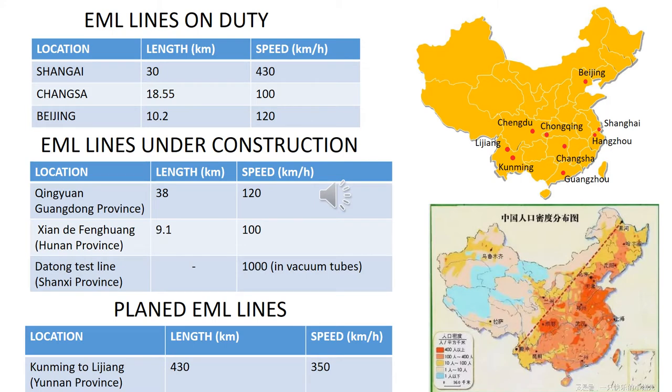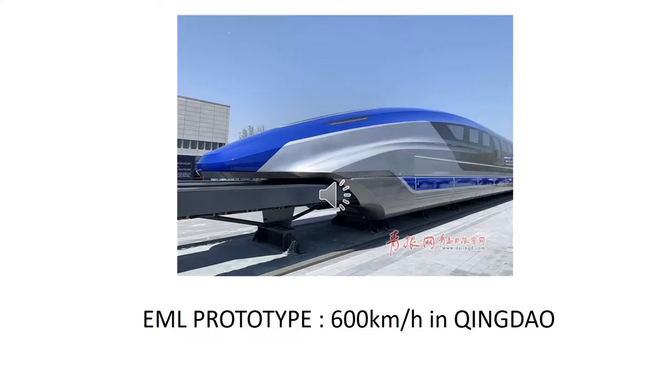The main effort for developing EML lines is done in China, where several lines are working in the most populated regions of the country. This slide shows an EML prototype that reached 600 kilometers per hour.